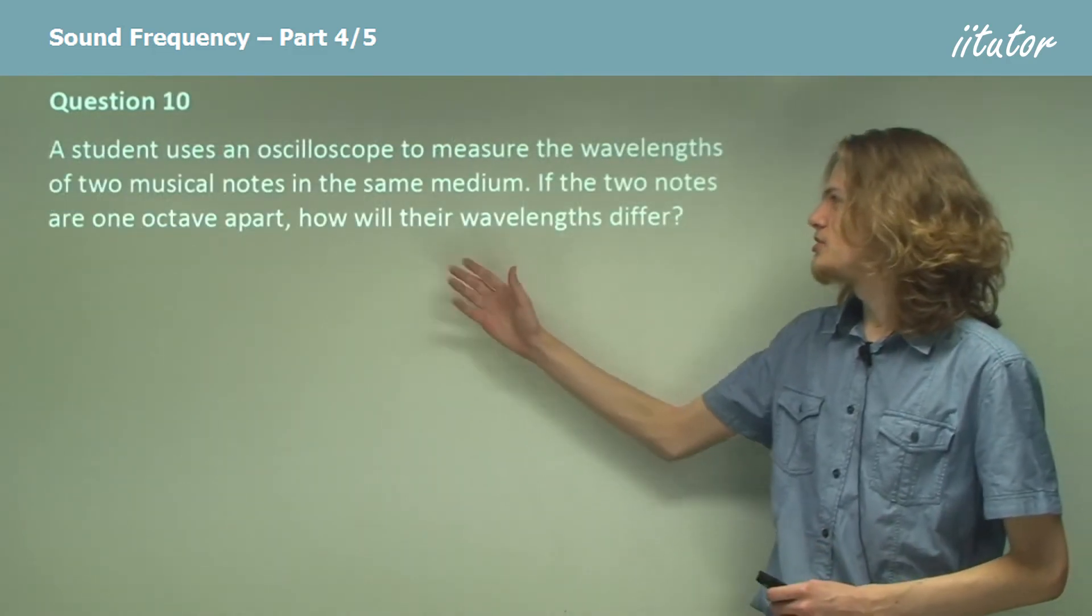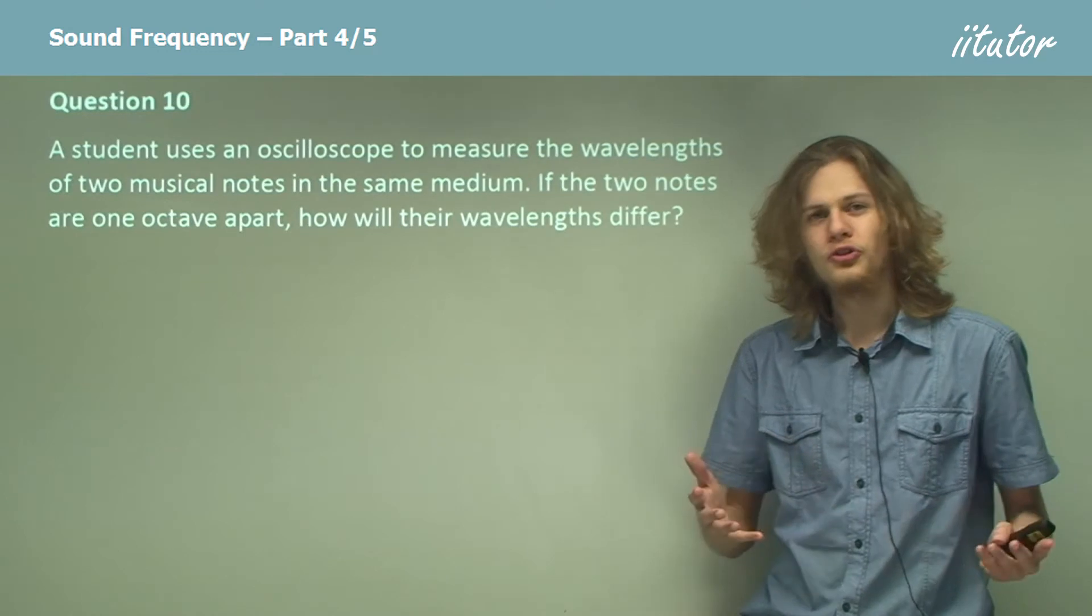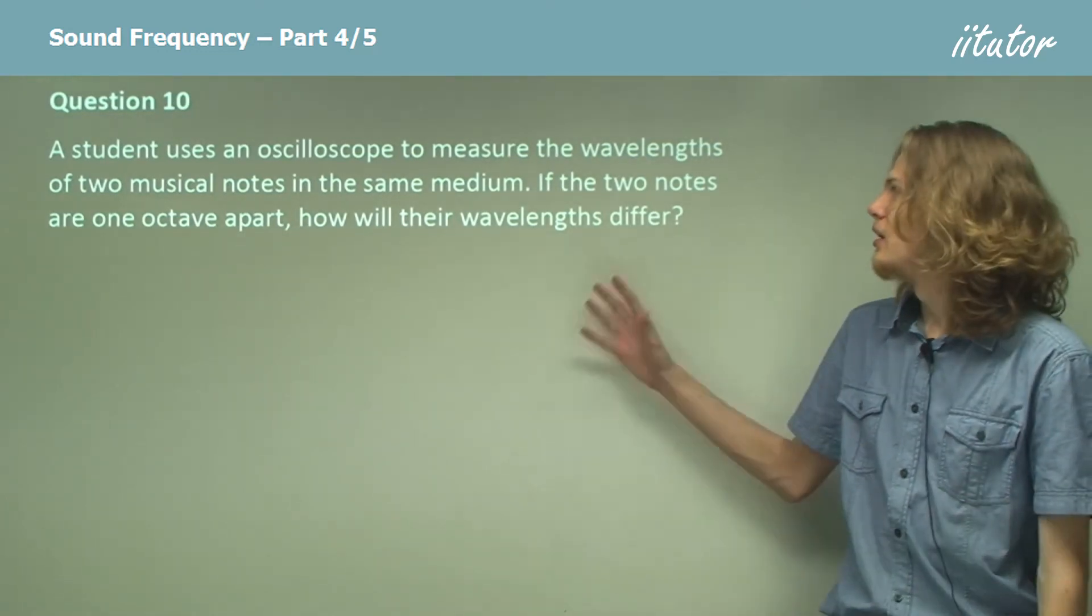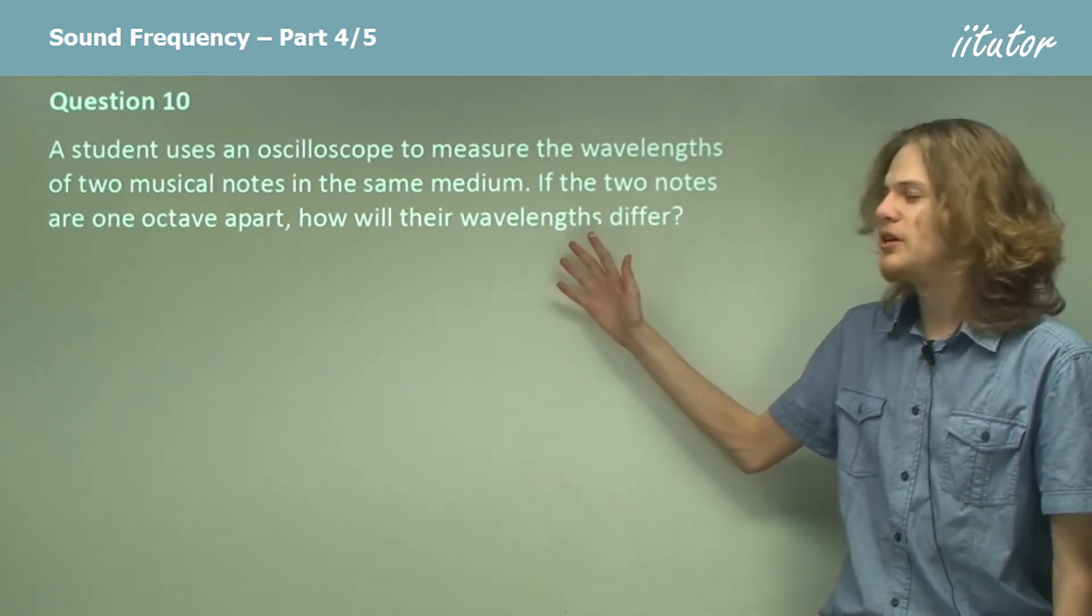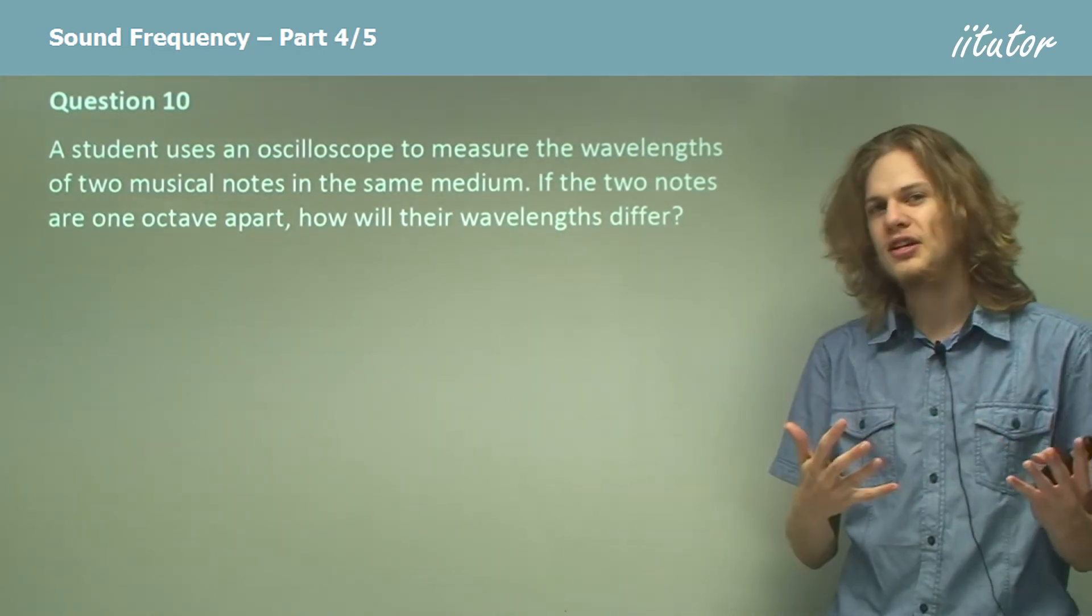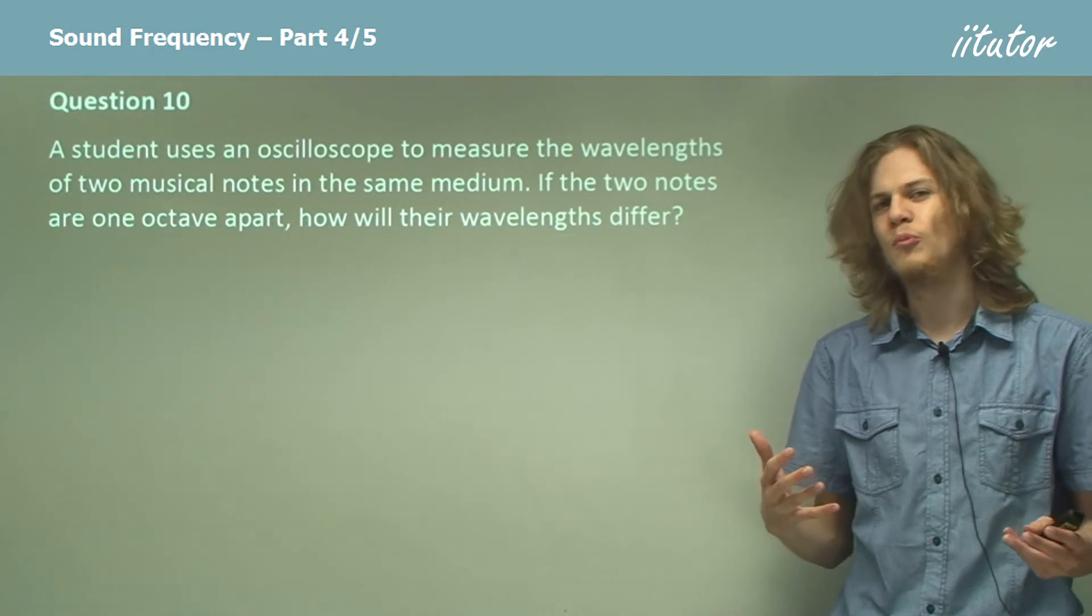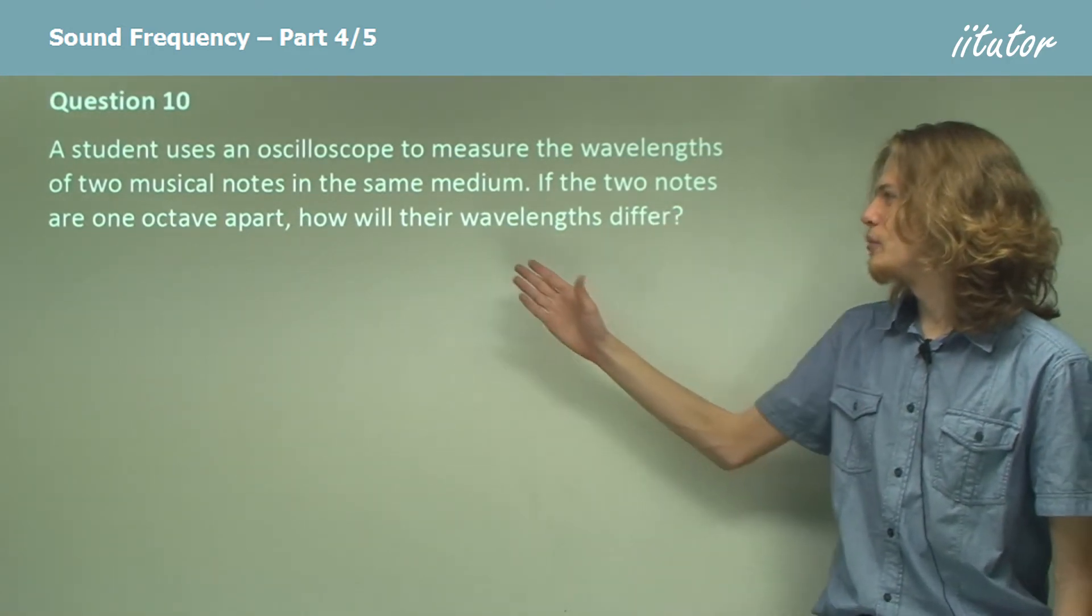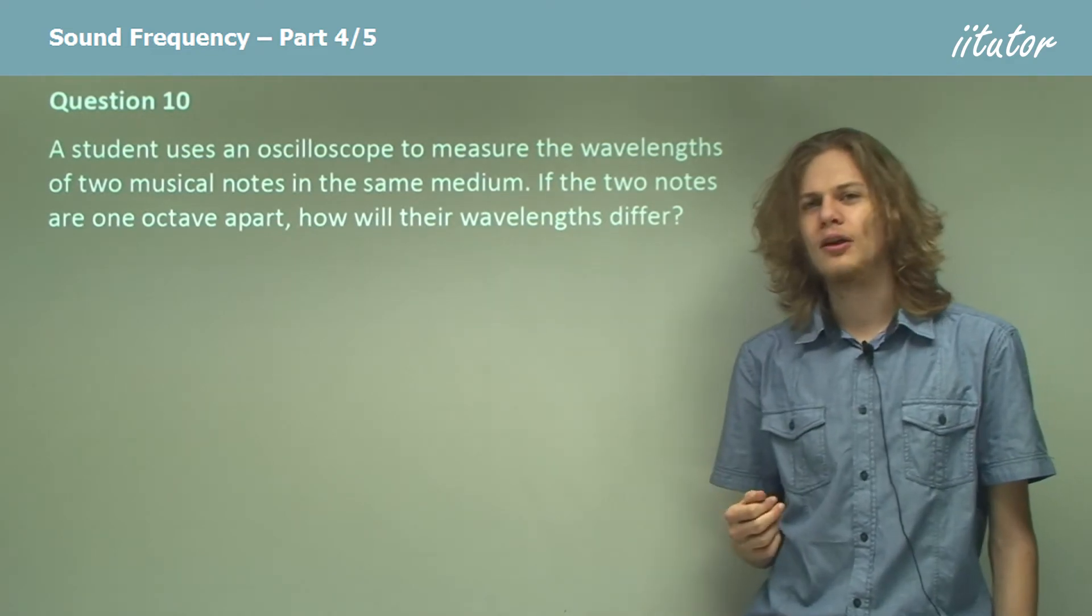A student uses an oscilloscope, which of course is a device for measuring the wavelength or frequency of waves, to measure the wavelength of two musical notes in the same medium, so they're not traveling at different speeds and we don't need to worry about what they're traveling through. If two notes are one octave apart, how will their wavelengths differ?